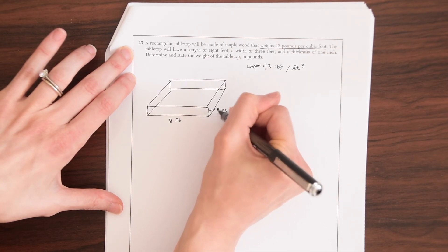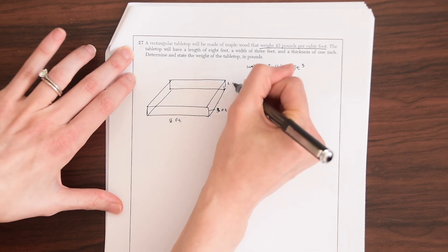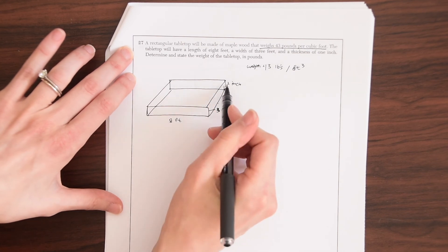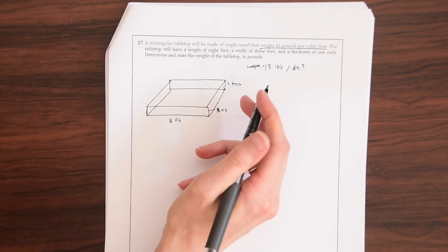The tabletop will have a length of 8 feet, a width of 3 feet, and the thickness of one inch. So this is going to be 3 feet. And then this will be one inch. So notice everything is in feet, except for the thickness. So just be careful of that.